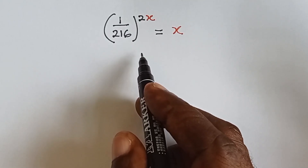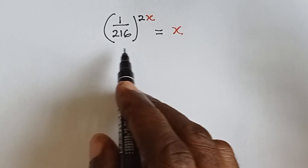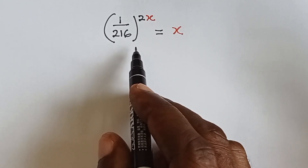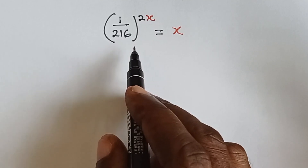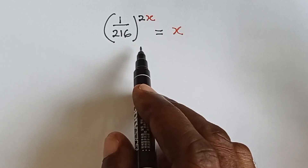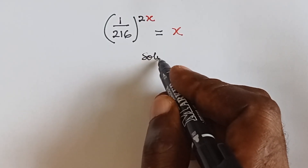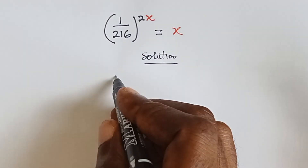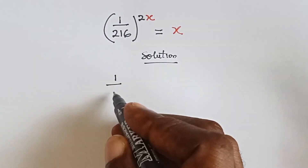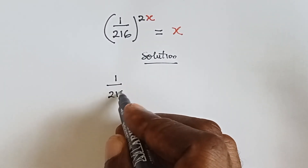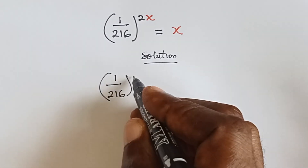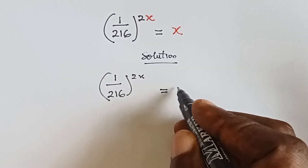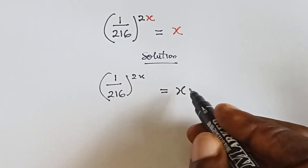Hi guys, welcome back to my channel. In this video I want to show us how we can solve this tricky exponential equation. We have 1 over 216 raised to the power 2x, and that equals x.